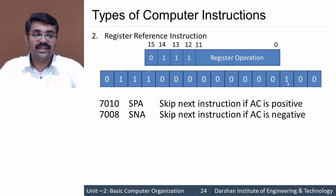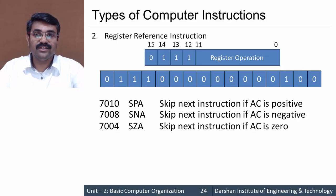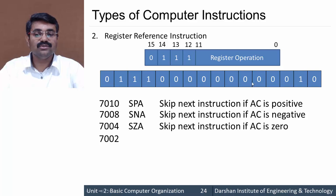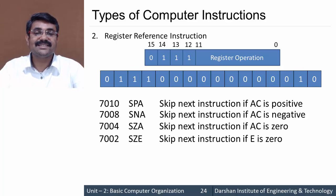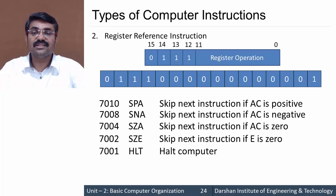Code 7004 is SZA — skip the next instruction if AC is zero; the next instruction is skipped only if the accumulator content equals zero. Code 7002 is SZE — skip the next instruction if E flip-flop is zero. The last register reference instruction is 7001, designated as HLT — halt the computer, indicating the program stops at this point. These are all the register reference instructions.